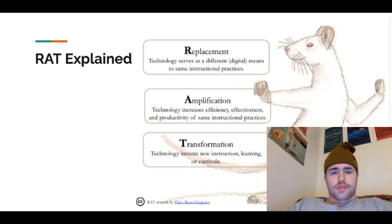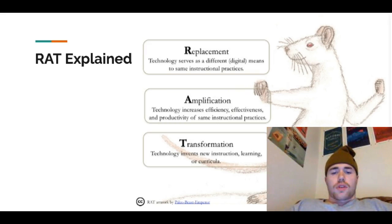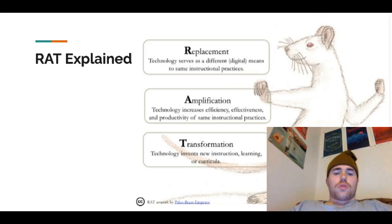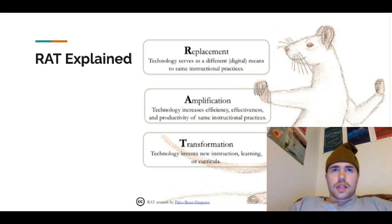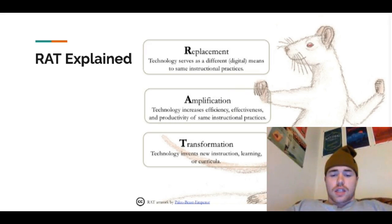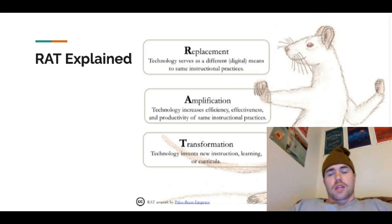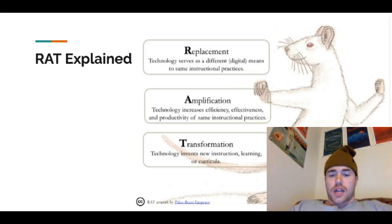The R in RAT stands for replacement, and they say the technology serves as a different digital means to the same instructional practices. So this would be like giving a student either a physical textbook or an online textbook — it's going to do the same thing. The student is going to get the reading done either way; it's just giving them a different option on how to do it.